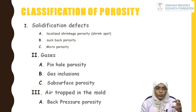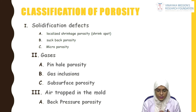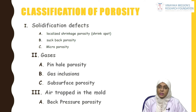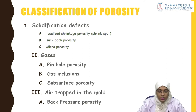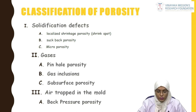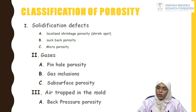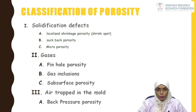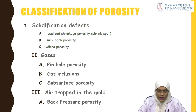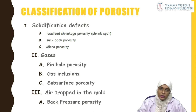Next is porosities. Porosities in casting are classified based on etiology into three causes: solidification defects, gases present within the casting, and trapped air inside the mold. From solidification defects, you get localized shrinkage porosity (shrink spot), suck back porosity, and micro porosity. From gases, you get pinhole porosities, gas inclusion porosities, and subsurface porosities. From trapped air inside the mold, you get back pressure porosity.